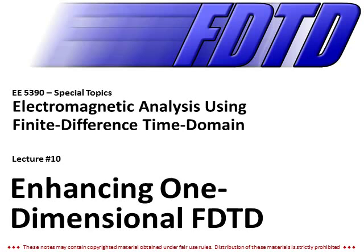At this point you have a reasonably sophisticated one-dimensional finite difference time domain code. We're using a total field scatter field source, perfect boundary conditions for absorption, Fourier transforms, and we're calculating transmission and reflection and visualizing the fields. There are other things we can consider to make our FDTD even more accurate and useful. These concepts apply to any dimension FDTD.